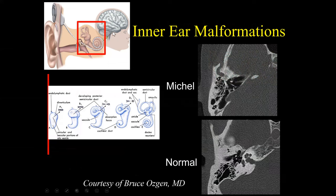Next we discuss the inner ear and various inner ear malformations. I still use the classic Jackler classification, described about 30 to 40 years ago, though I'll also address the IP1, IP2, IP3 terminology. The inner ear is formed from the otic vesicle. If development arrests at this level, the otic vesicle never forms, resulting in Michel's anomaly — complete absence of inner ear development. This is a rare malformation, but it has a classic appearance on imaging.